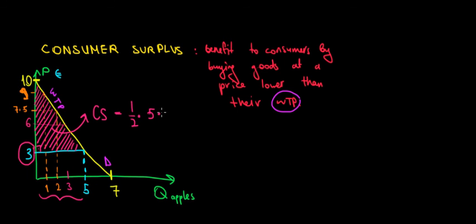If we do the math, that's 35 divided by 2, so that's 17.5. That would be the consumer surplus, 17.5 euros worth of value.